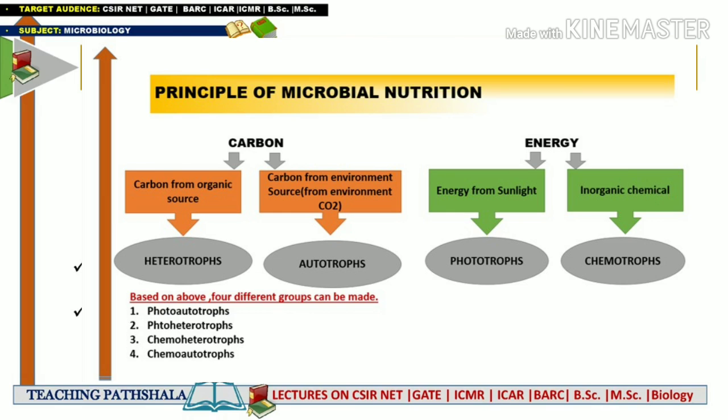To summarize the carbon source classification: if a microorganism fulfills its carbon need with the help of an organic source, it is called a heterotroph; if it fulfills its carbon need with the help of environmental carbon dioxide, it is called an autotroph.